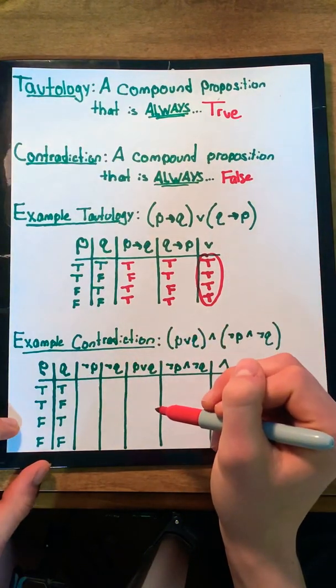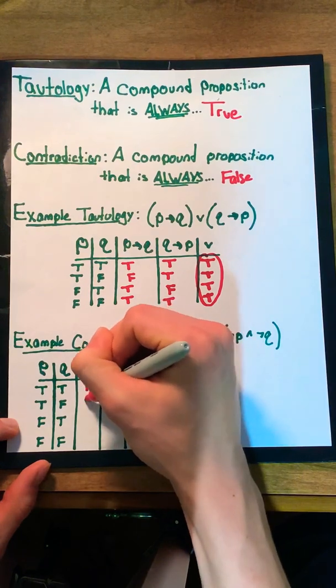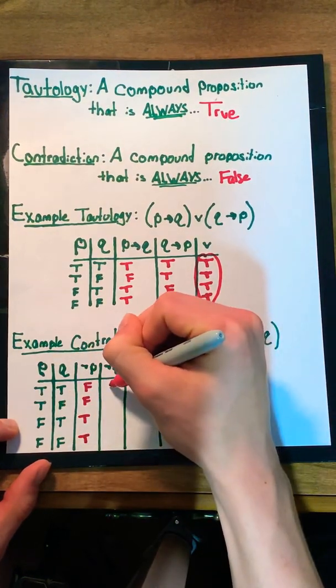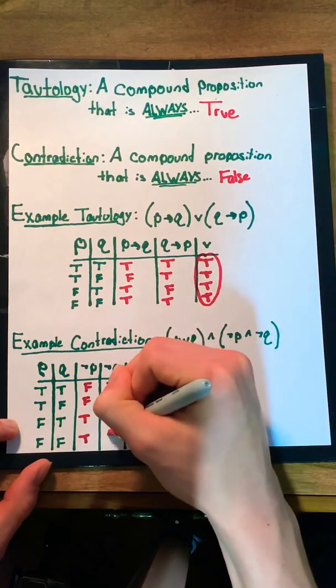For not p and not q, we know that the not sign will just negate the values of p and q. So we'll get false, false, true, true, true and false, true, false, true.